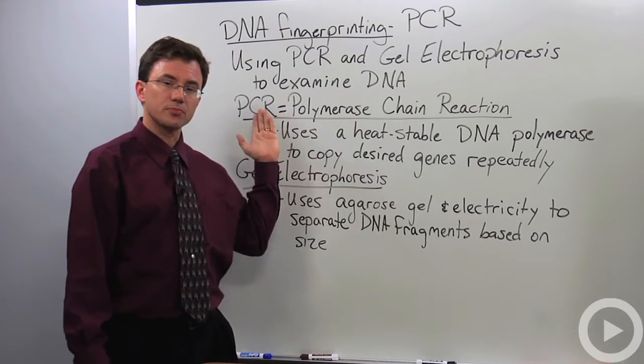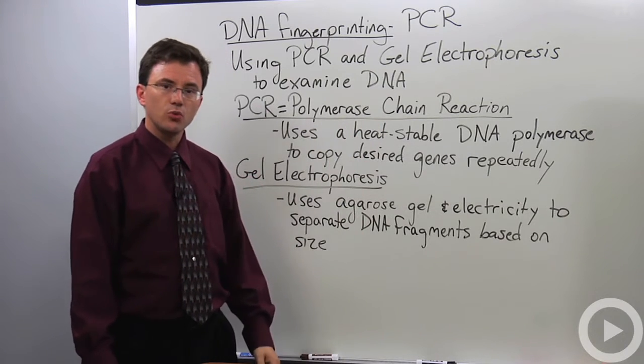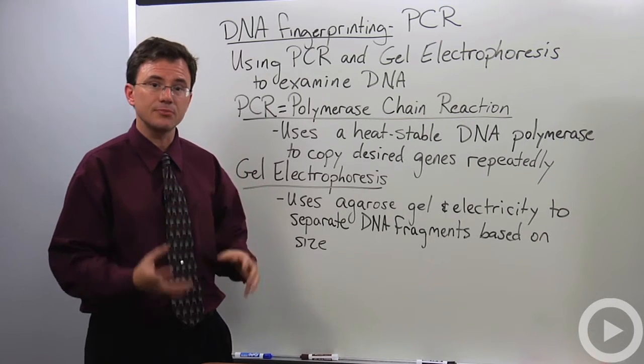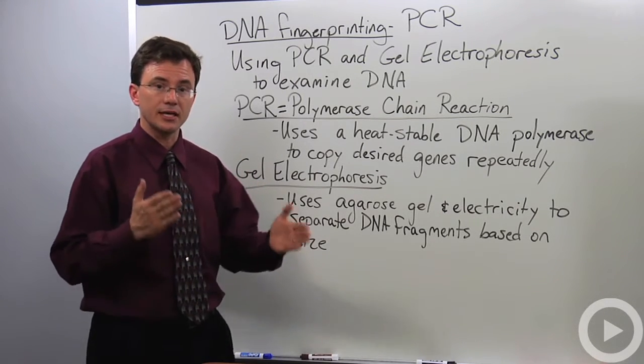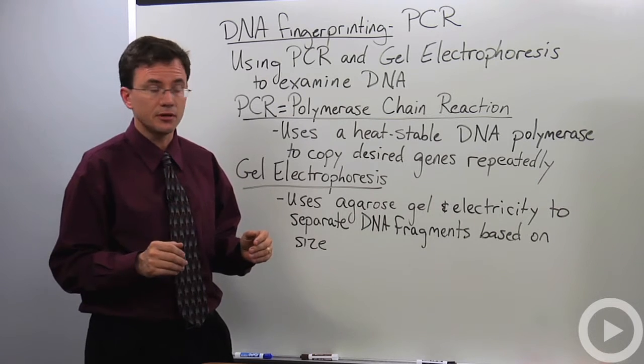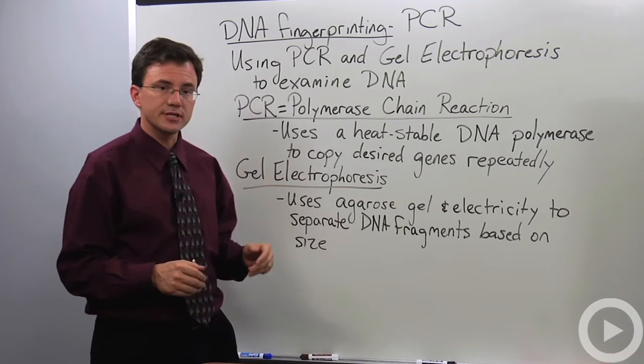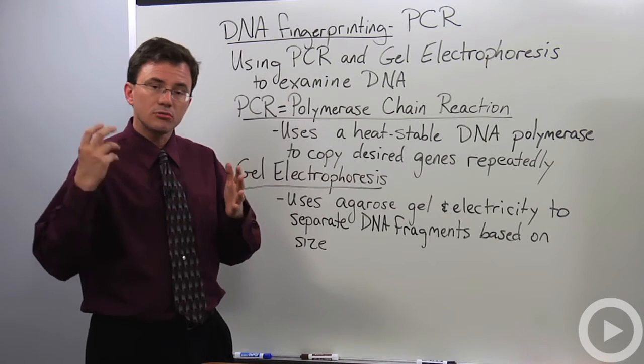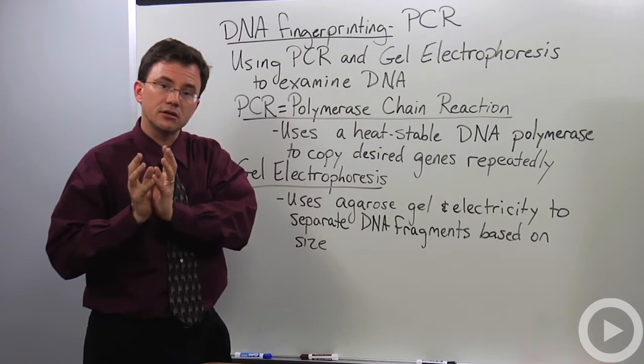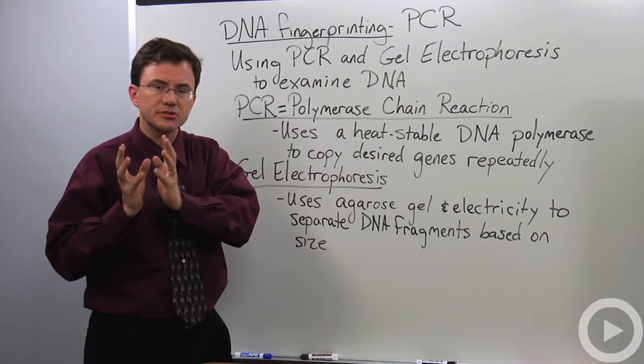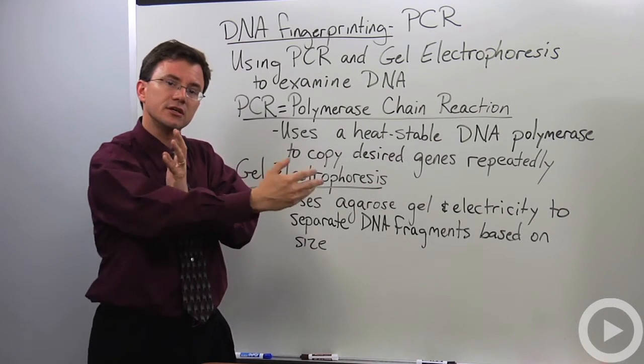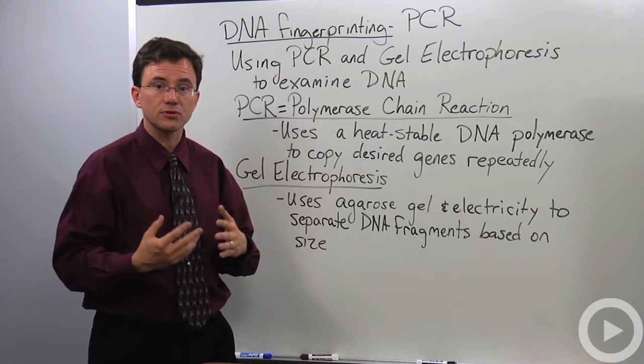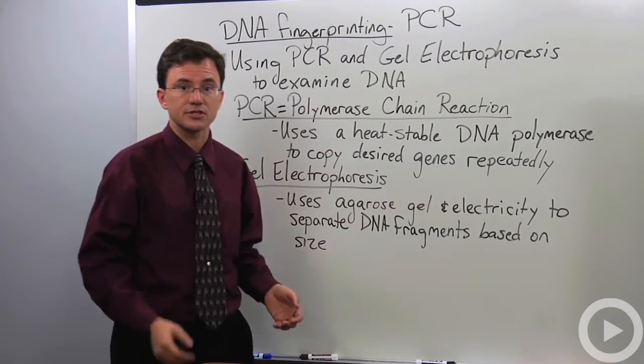Now PCR stands for polymerase chain reaction, which is a process for copying DNA. It uses a special heat-stable DNA polymerase to copy a specific gene that you're interested in. Gel electrophoresis uses the fact that DNA is negatively charged to take your copied DNA, put it into an agarose gel, and then use electricity to drive that charged DNA through the gel. Because that gel acts like an obstacle course, it separates out the DNA fragments based on their size.